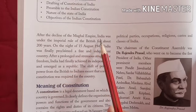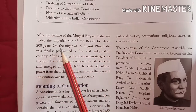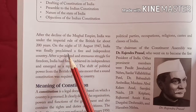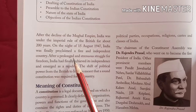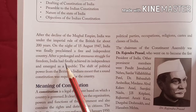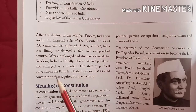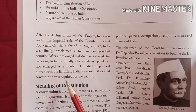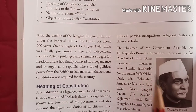After the decline of the Mughal Empire, India was under the imperial rule of the British for about 200 years. On the night of 15th August 1947, India was finally proclaimed a free and independent country after a prolonged and strenuous struggle for freedom. India had finally achieved independence and emerged as a republic, and the shift of political power from the British to Indians meant that a sound constitution was required for the country.